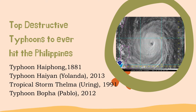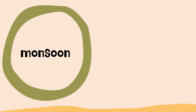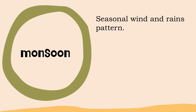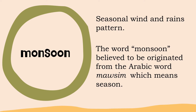Let's move on to discuss monsoon. A monsoon is a seasonal wind and rain pattern. The word monsoon is believed to have originated from the Arabic word mausim, which means season.